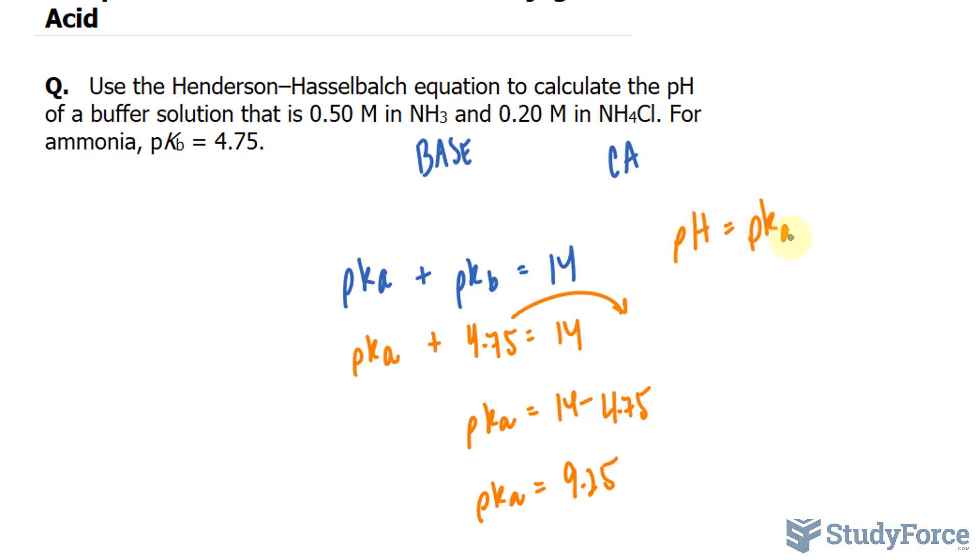pH is equal to pKa plus log of the base concentration divided by the acid concentration. pKa as shown right here is 9.25 plus log of our base, its concentration was 0.50 for NH3 over 0.20.